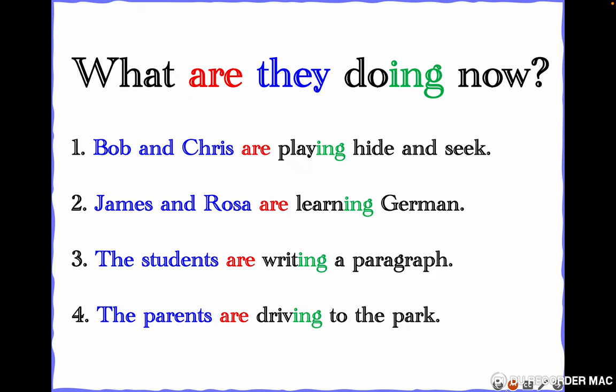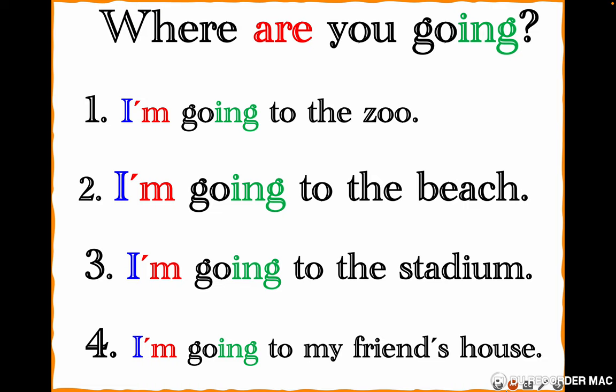'What are they doing now?' — 'they' meaning two persons. Note: 'Chris' — the 'ch' is pronounced like 'k'. Bob and Chris are playing hide and seek. James and Rosa are learning German. The students are writing a paragraph. The parents are driving to the park. Let's repeat: Bob and Chris are playing hide and seek, James and Rosa are learning German, the students are writing a paragraph, the parents are driving to the park.